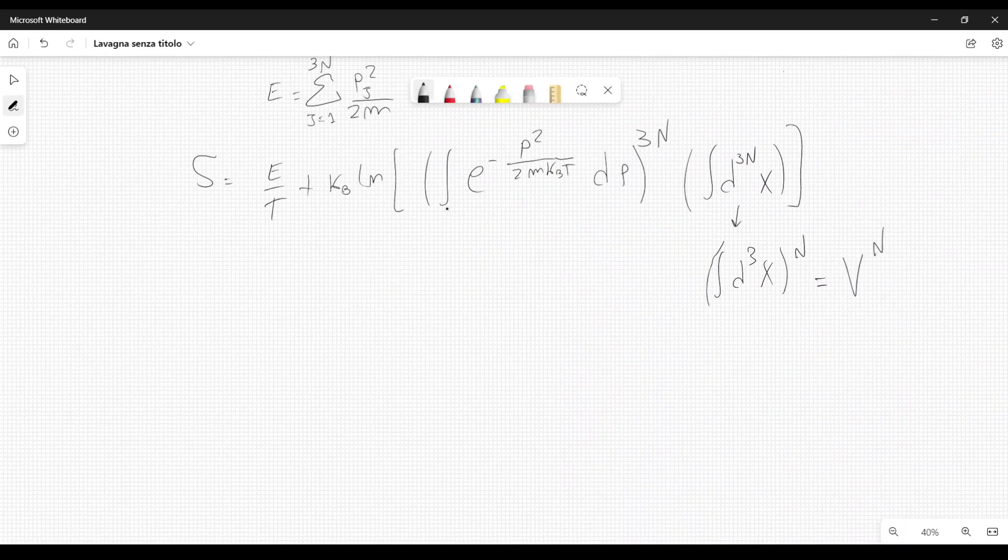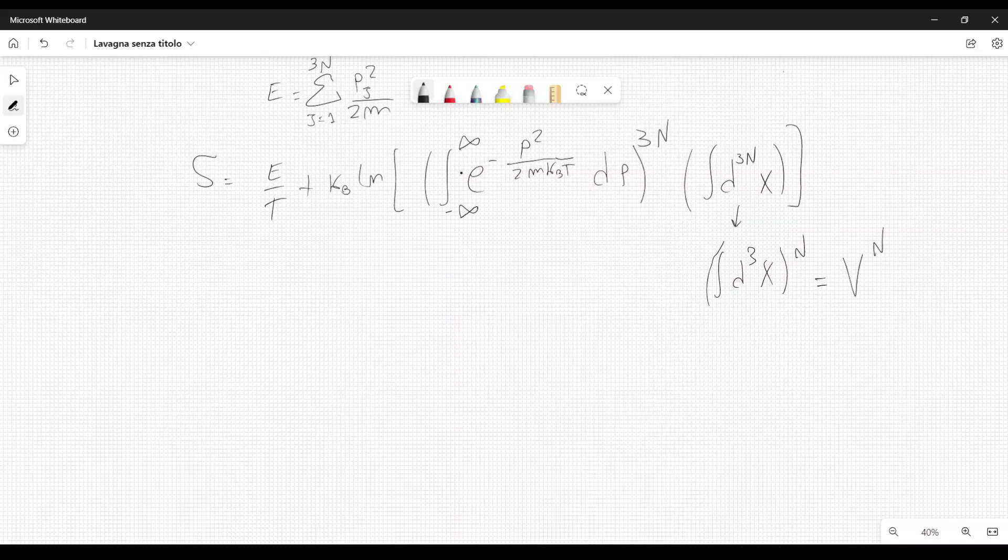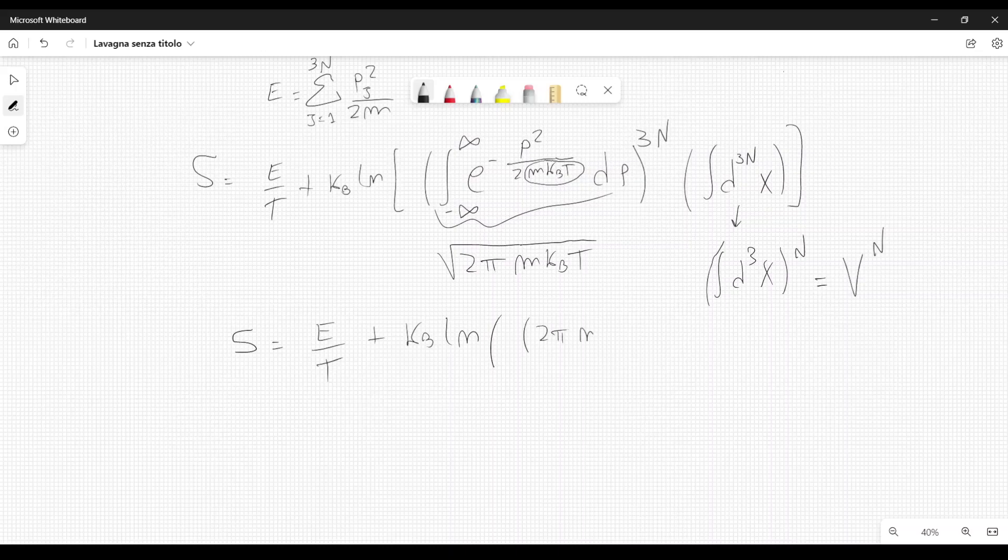Now we just have to carry out the integral for momentum, which is very easy. In this case, we have to integrate from minus infinity to plus infinity. This is just a Gaussian integral where the variance is this thing in the denominator, m kb times t. So the result of that integral is square root of two pi, and then inside the square root, we have m kb temperature. Therefore, we can rewrite the entropy as energy divided by temperature plus k Boltzmann logarithm of two pi m kb temperature to the power 3n over two, and then this multiplies the volume to the power n. This expression is the more accurate, the closer this gas is to being an ideal one.